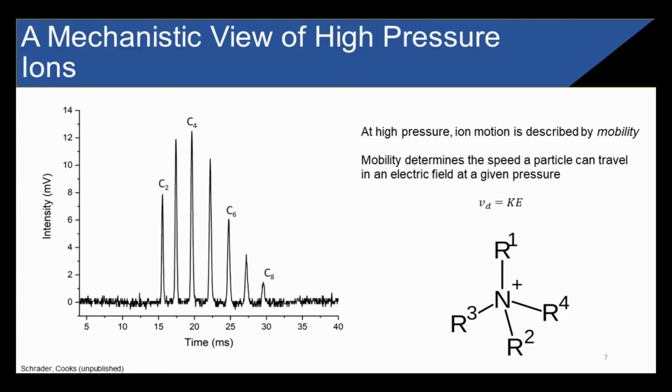Whenever we add in an electric field to this, we now have to start thinking about the ion's mobility. So, at high pressure, the mobility is the main descriptor of ion motion, while in vacuum, the ion's energy and m over z are the main descriptors. The mobility determines the speed a particle can travel in an electric field at a given pressure. So, here we have the drift velocity Vd is equal to K the mobility times E, which is the electric potential.